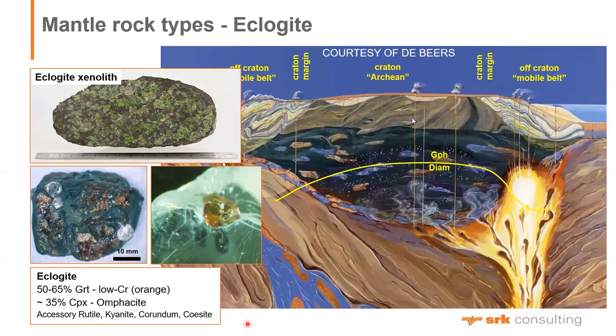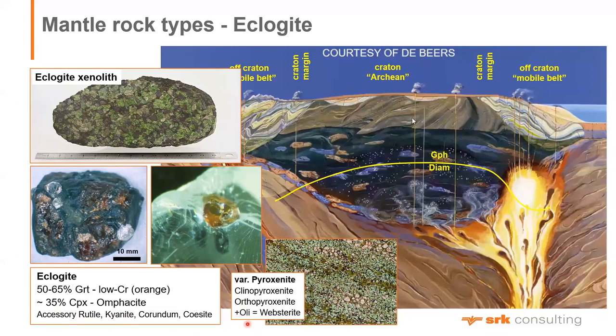A variety of eclogitic rocks called pyroxenites are garnet-pyroxene rocks in which either clinopyroxene or orthopyroxene is unusually abundant modally. They have the same mineralogy as eclogite — green clinopyroxene plus light-colored garnet — but with much more clinopyroxene, so we call them pyroxenites. If olivine is added into the mix, the rock is called a websterite. The focus will be on pyroxenites and eclogites.